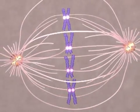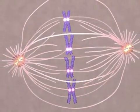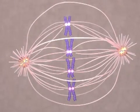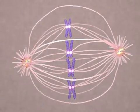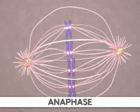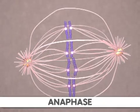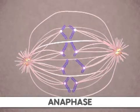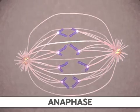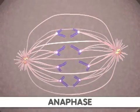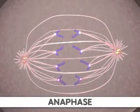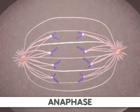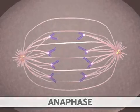This occurs during anaphase through a shortening of the microtubules attached to the kinetochores. Additionally, the poles of the cell move farther apart, causing increased separation of sister chromatids. At the end of anaphase, the sister chromatids have moved to the two ends of the cell.